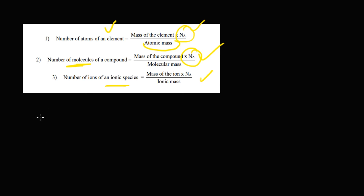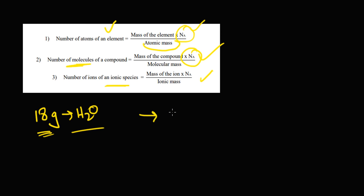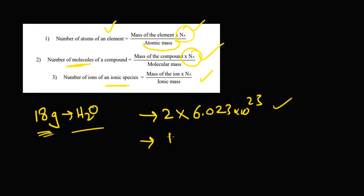Let's say we have a known quantity — for water. We want to find out how many hydrogen atoms and how many oxygen atoms are in it. Simply, in 18 grams of water, hydrogen has 2 atoms, so we write 2 and multiply by Nₐ, whose value is 6.023 × 10²³. This gives us the number of hydrogen atoms. Similarly, if we want to find the number of oxygen atoms — oxygen has 1 atom — we multiply by Nₐ.